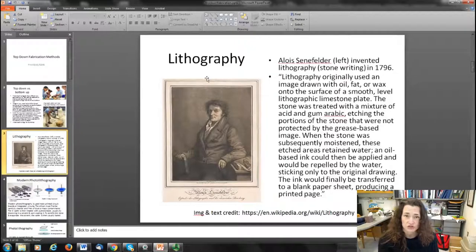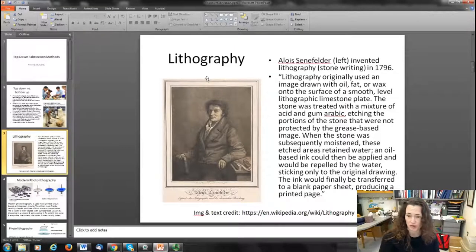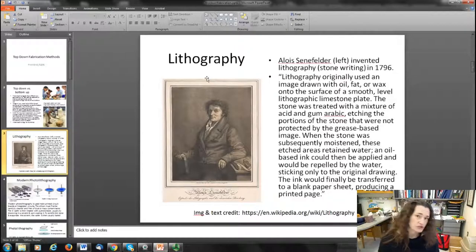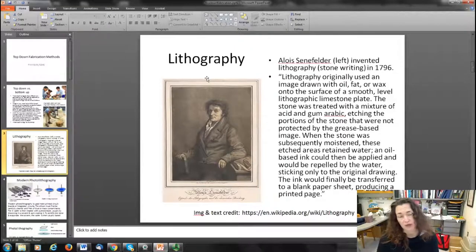When the stone was moistened, those etched areas retained water, and then an oil-based ink could be applied and would be repelled by the water, sticking only to the original drawing. Then you could transfer that ink to a blank paper sheet, producing a printed page.